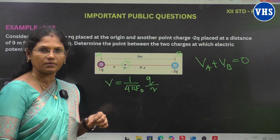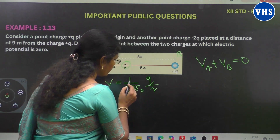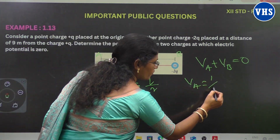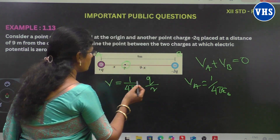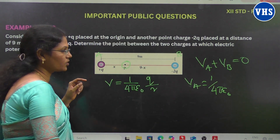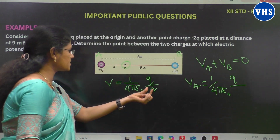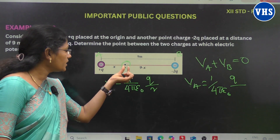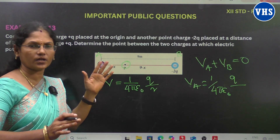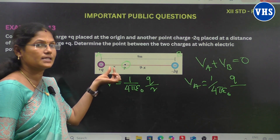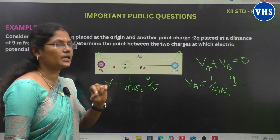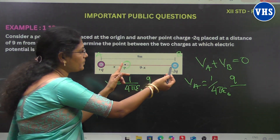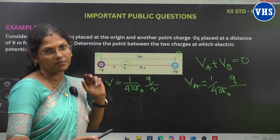We will find the potential at point P between the two charges. The formula is 1 by 4 pi epsilon naught × q by r. We will find Va first. Now, if the distance from the first charge to point P is x, then the remaining distance from point P to the second charge is 9 minus x. For example, if the total distance is 10 meters and one part is 5, the remaining is 10 minus 5 = 5. So, total distance is 9 meters, one part is x, and the remaining is 9 minus x.